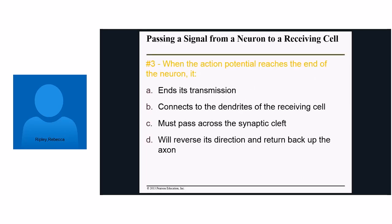So what happens after that electrical signal reaches the end of a neuron? When the action potential reaches the end of the neuron, it — A) ends its transmission; B) connects to the dendrites of the receiving cell; C) must pass across the synaptic cleft; or D) reverses direction and returns back up the axon. The dendrites pass the message to the cell body, but before it can get to those dendrites, it actually has to pass across a synaptic cleft.